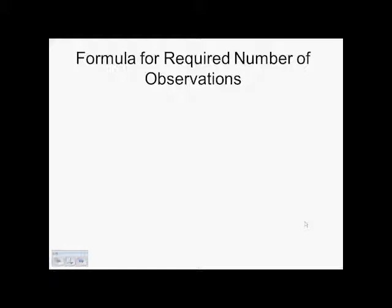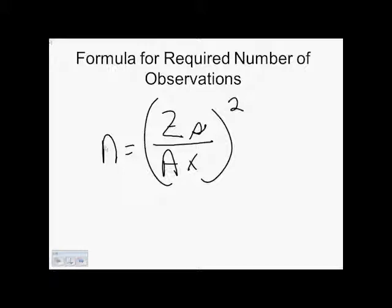The formula for this is n equals z times s divided by a times x, that full quantity squared. Well, what do these numbers mean?